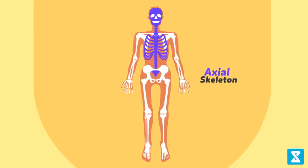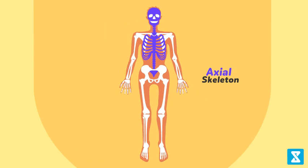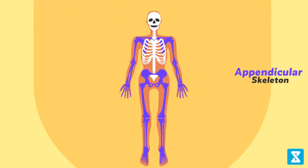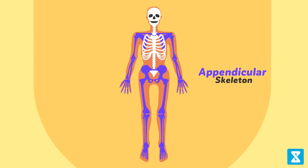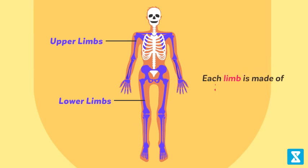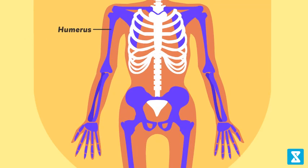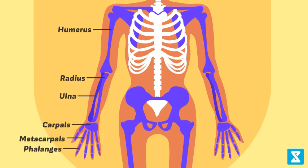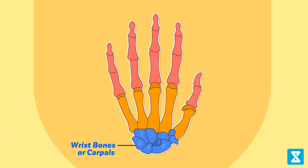Thoracic vertebrae, ribs, and sternum together form the rib cage of the human body. This completes the axial skeleton. Now, the appendicular skeleton: the bones of the limbs along with their girdles constitute it. Each limb is made of 30 bones. The bones of the upper limb are the humerus, radius, and ulna, carpals, metacarpals, and phalanges. Wrist bones or carpals are eight in number, while palm bones or metacarpals are five in number.